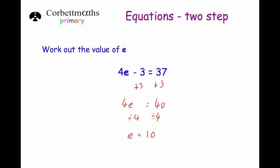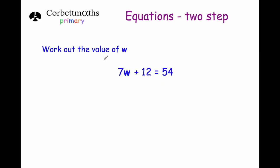The next example says work out the value of w. We've got 7w plus 12 equals 54. Again, we want to get rid of the plus 12 to begin with, so we minus 12 from both sides. 7w plus 12 take away 12 leaves you with 7w, and on the other side 54 take away 12 equals 42.